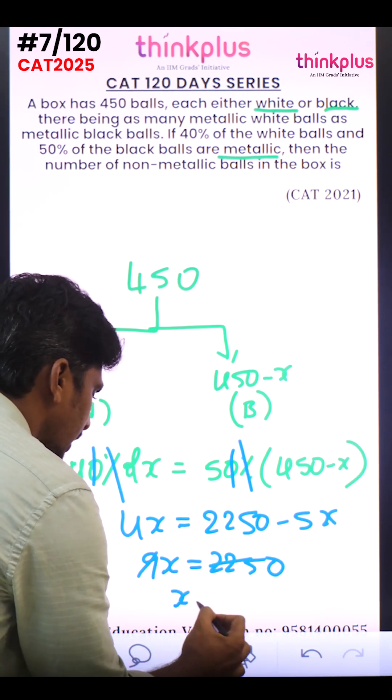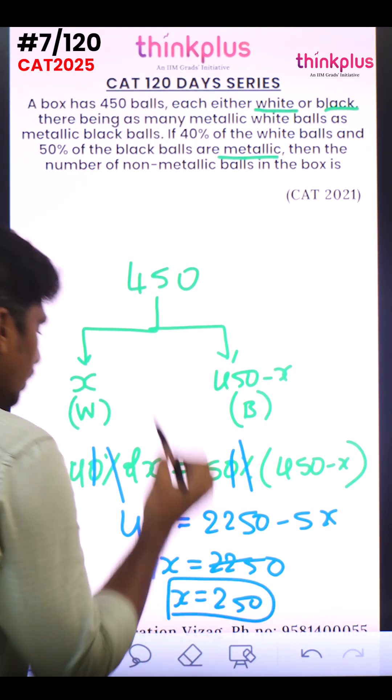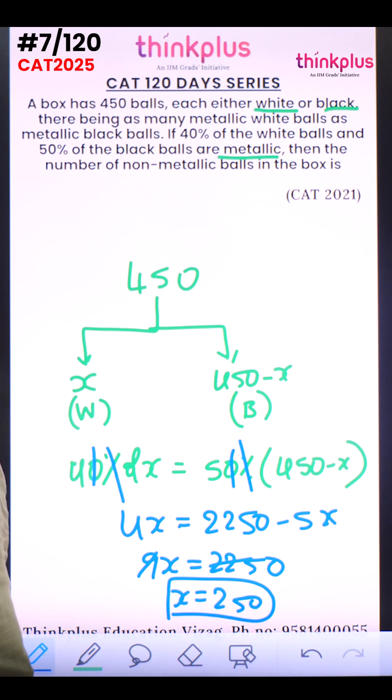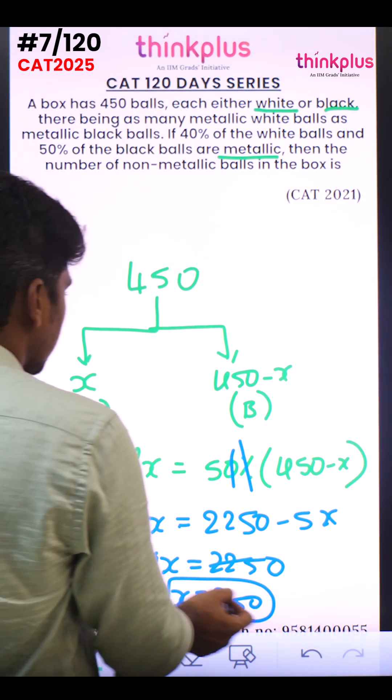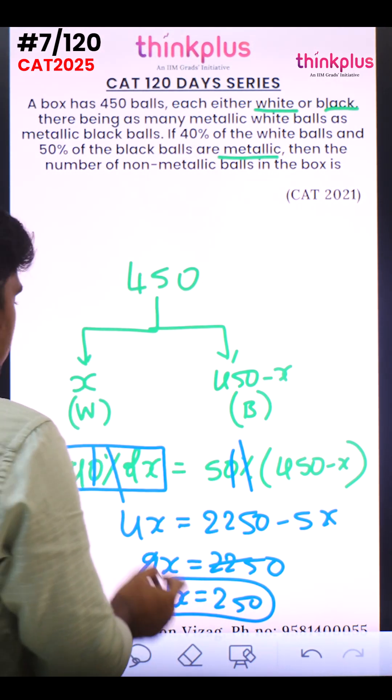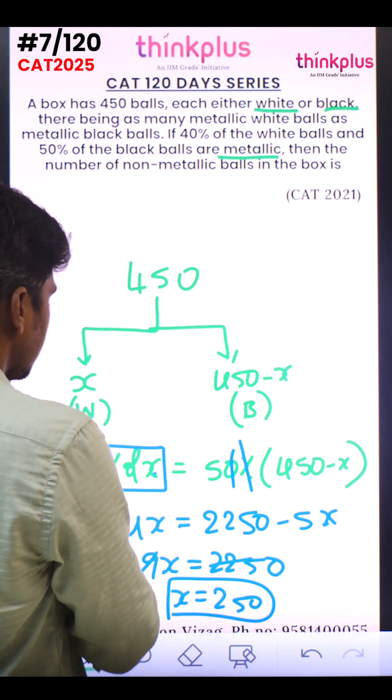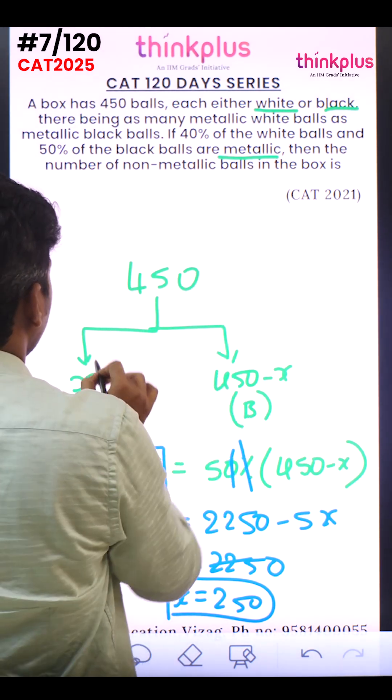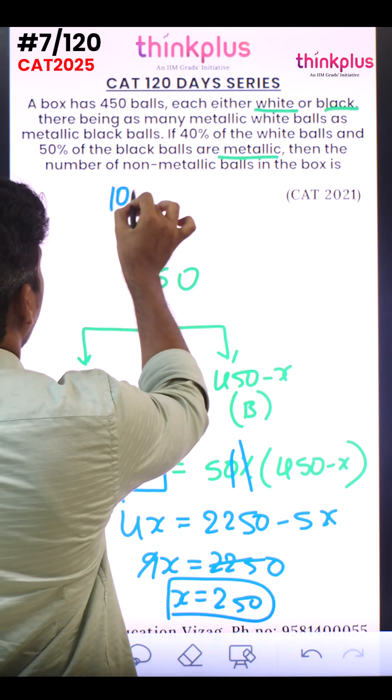So x equals 250. Now for the number of non-metallic balls: 40 percent of 250 is 100, so there are 100 white metallic balls and 100 black metallic balls.